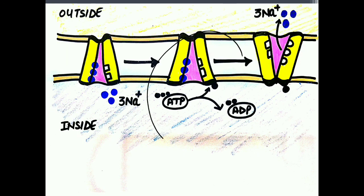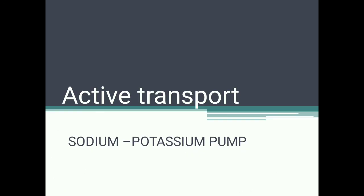This is why we call it active transport — because of the ATP-dependent step. Phosphorylation of the pump is necessary, and ATP facilitates that phosphorylation. Hence it is called active transport. This was all about active transport and the sodium potassium pump. For any queries, you can write in the comment section.